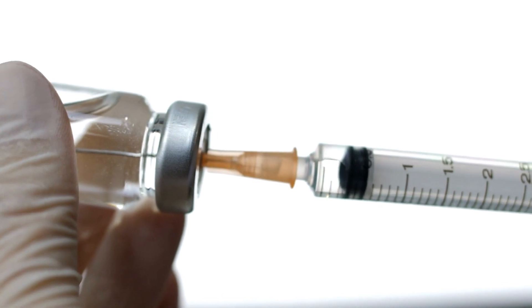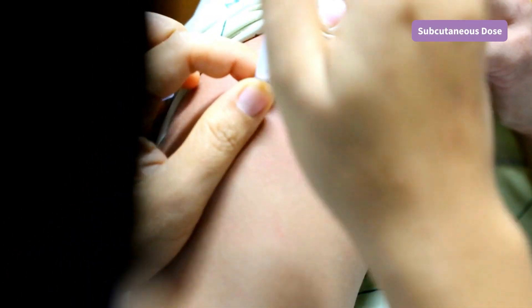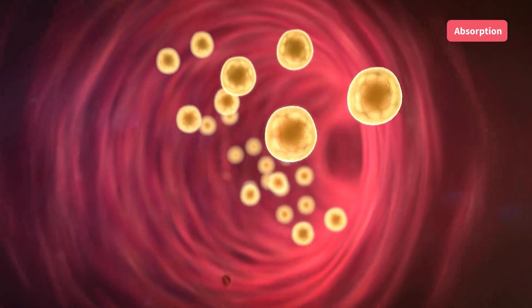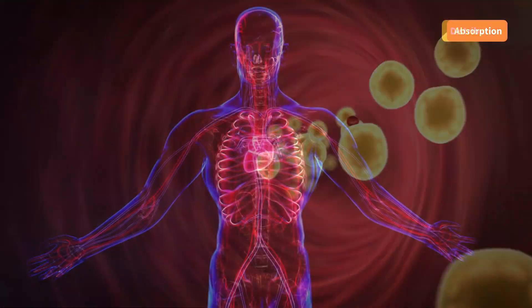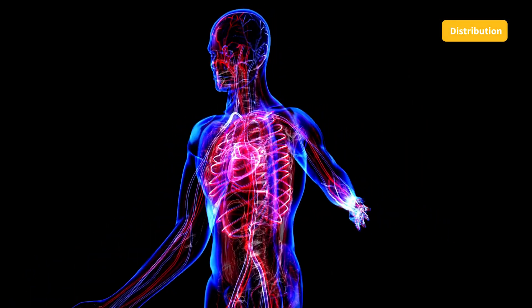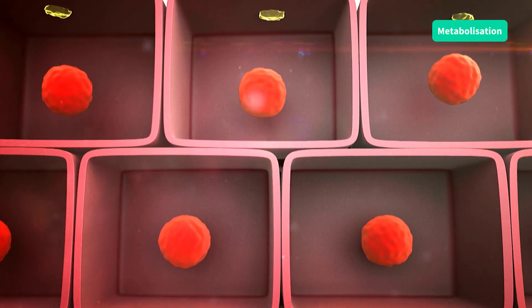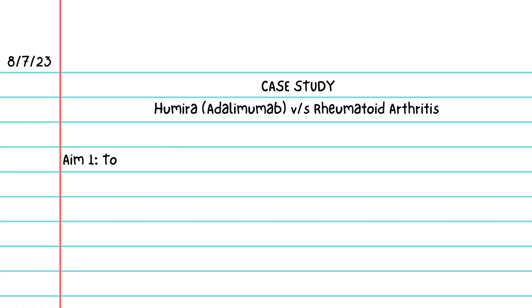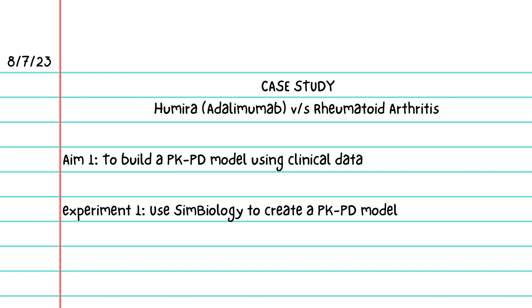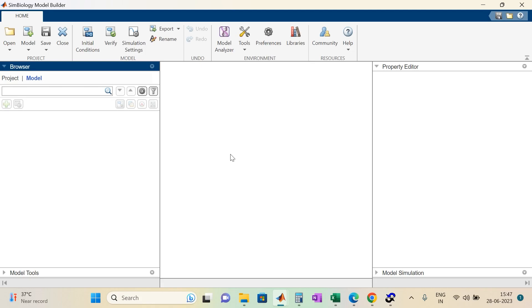In clinical trials, drugs are administered via a particular route where they are absorbed into tissues over time. Blood helps distribute Humira throughout the body so that it reaches its intended target location. As Humira spreads, the body simultaneously metabolizes and eliminates it. All these processes together reveal a concentration profile, which is captured by a mathematical framework accounting for each step using an application called SimBiology in MATLAB.